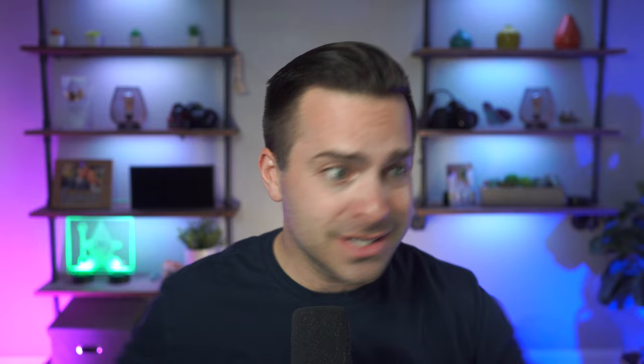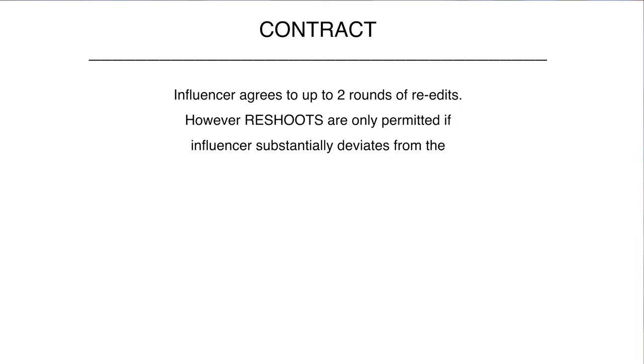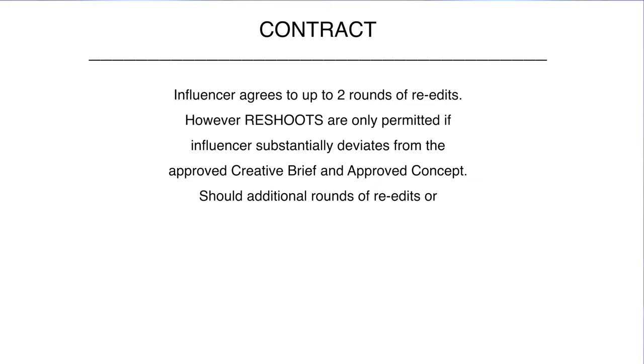This is the reason you must make a distinction between edits and reshoots. Edits are simple cuts to a video or an easy update to a caption. The brand can't just say, 'we didn't like the color shirt you were wearing, so you need to reshoot the whole thing.' Not going to happen. That's why you need to always request language like: 'Influencer agrees to up to two rounds of re-edits. However, reshoots are only permitted if influencer substantially deviates from the approved creative brief and approved concept. Should additional rounds of re-edits or reshoots be required, incremental compensation will be mutually negotiated.'